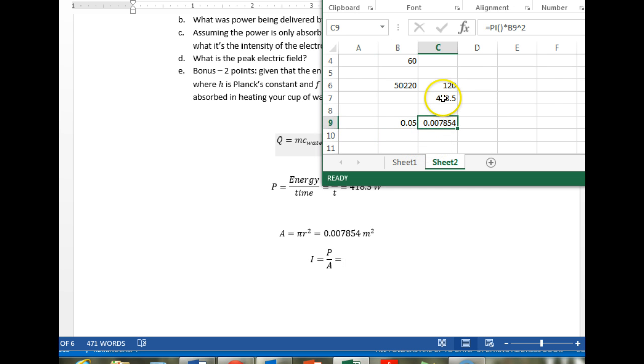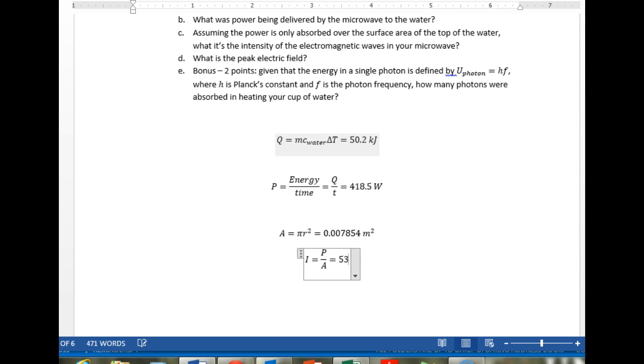Here's our area, here's our power. So our intensity is the power per unit area. Our intensity is 53,285.07 watts per square meter. So 53.3 kilowatts per square meter.